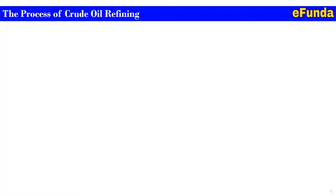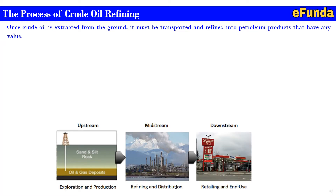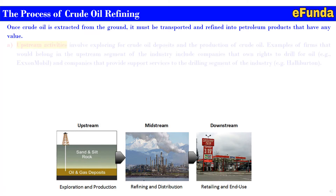Moving on to the process of crude oil refining: once crude oil is extracted from the ground, it must be transported and refined into various petroleum products of value. Upstream, midstream, and downstream activities are involved. Upstream activities involve exploring for crude oil deposits and production of crude oil. Examples include companies that own drilling rights such as ExxonMobil, and companies that support drilling operations such as Halliburton.